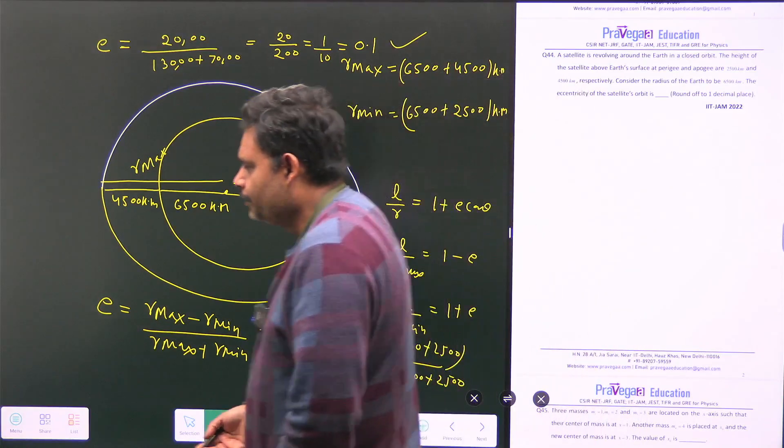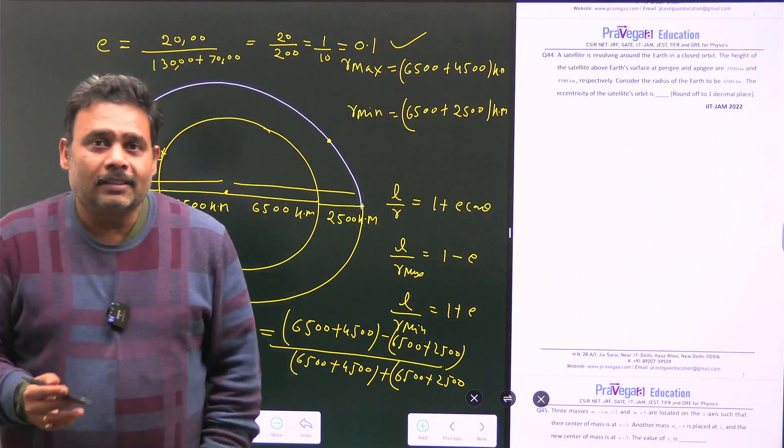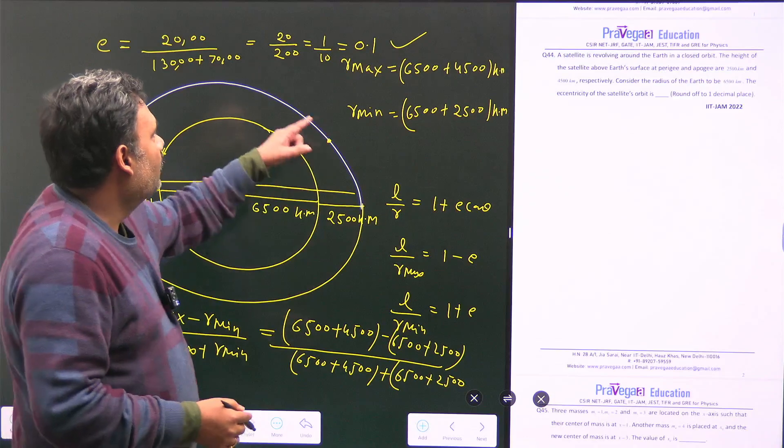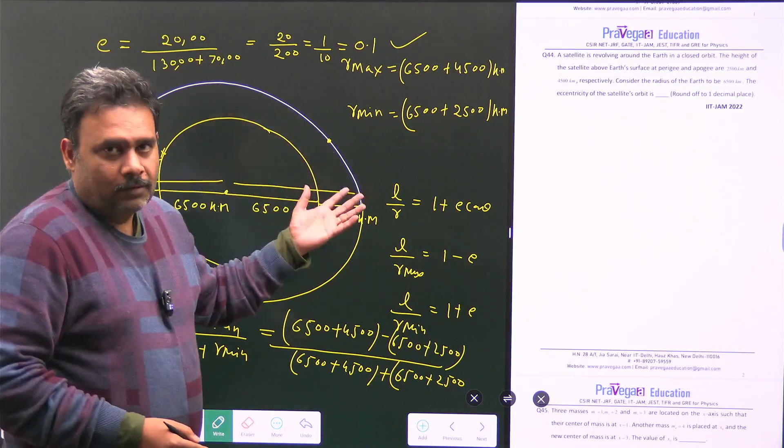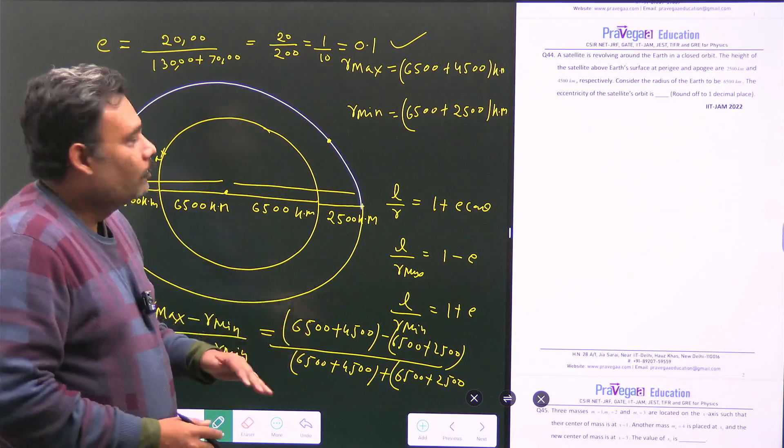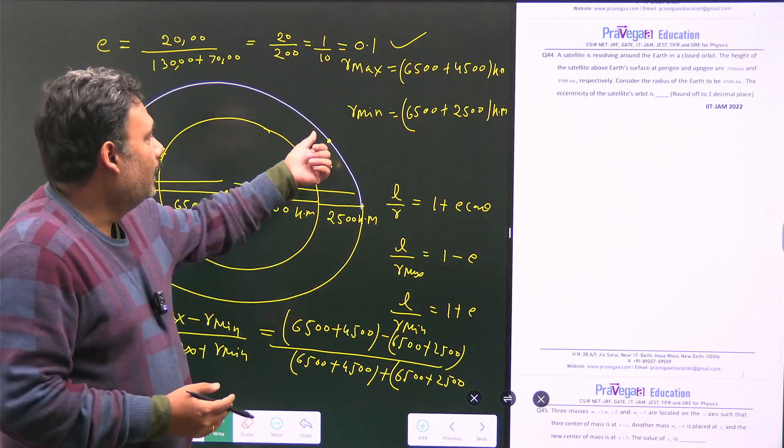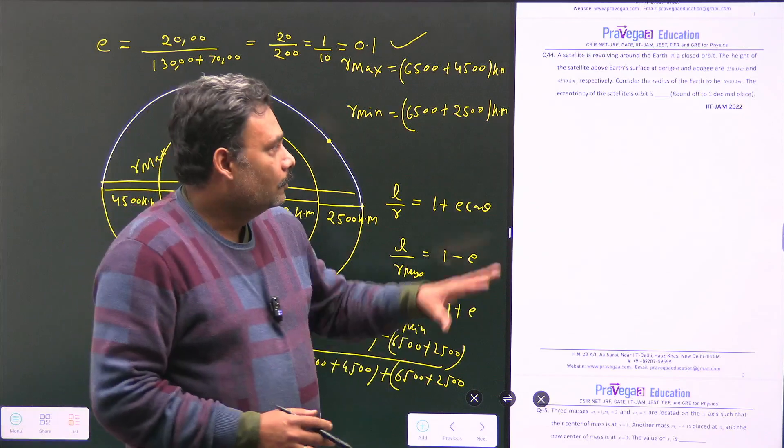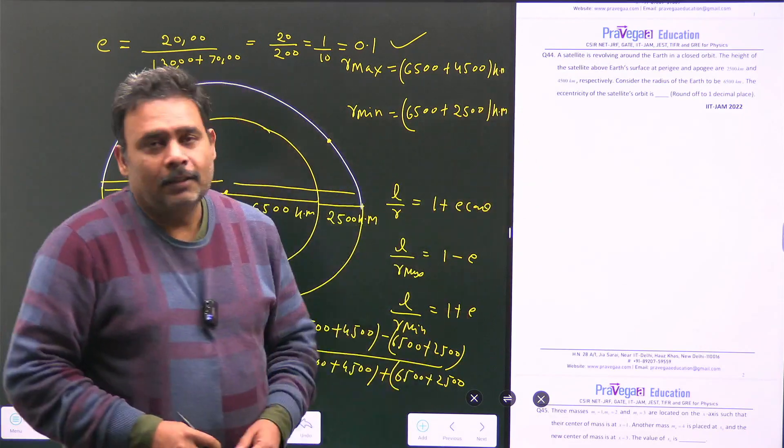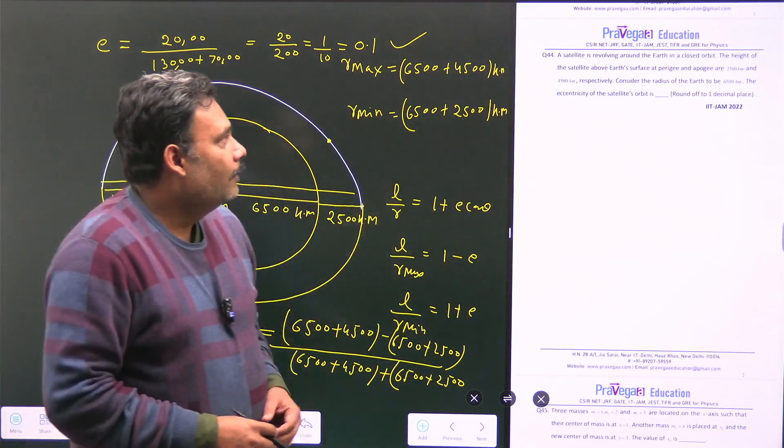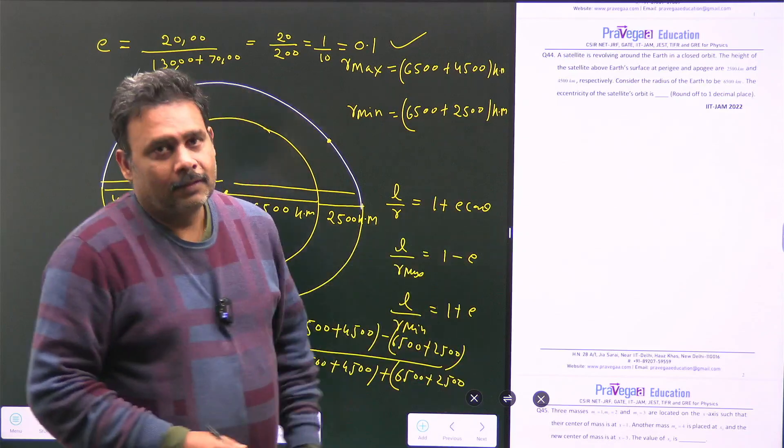So this is a very nice problem. And the good thing about this problem is that you can solve much more things once you get this one. You can find what will be the energy of this particular satellite in this orbit and all this thing. So it's a nice problem. You have to just do this one in a complete way. Thank you.